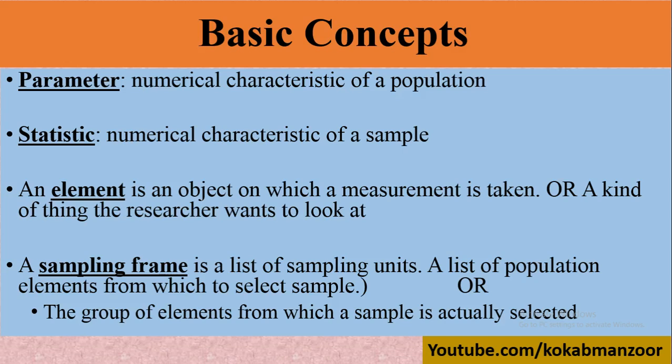Sampling frame is the list from which the sample is selected. For example, if college students are our population and we know there are about 1000 students, but some are not coming regularly, then the authenticated registered student list — say, 950 enrolled and punctual students — is our sampling frame. It is a list of population elements from which the sample is actually selected.